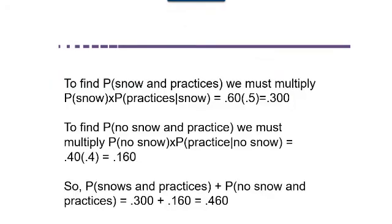That's all summarized on this slide. This is a pretty complicated problem, but it illustrates that 'or' means add, 'and' means multiply, and when you have an AND you have to take into consideration that the first thing has occurred — so you use the probability of B given A. That's where we're going to stop today. I hope you found this video helpful. If you did, please remember to give it a thumbs up — that helps other students find the video.